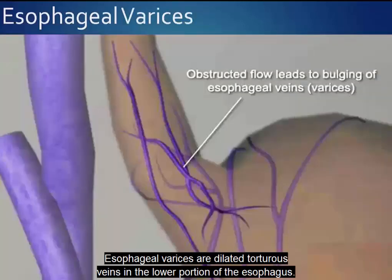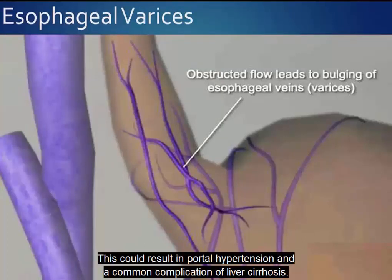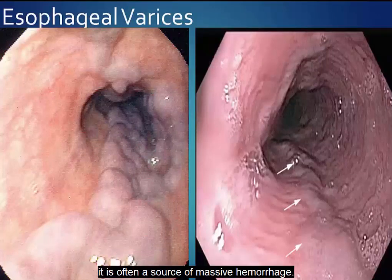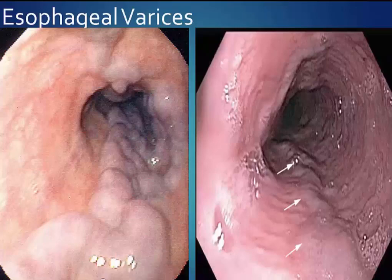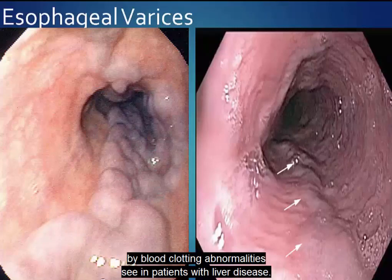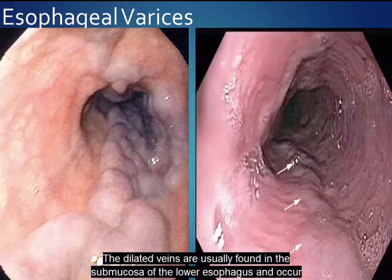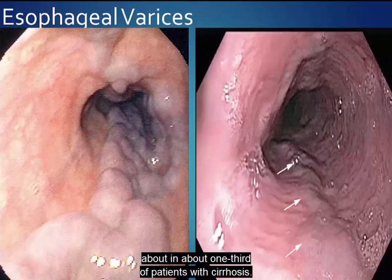Esophageal varices are dilated, tortuous veins in the lower portion of the esophagus. This can result in portal hypertension and is a common complication of liver cirrhosis. Due to the elevated pressure in the veins that drain into the portal system, it is often a source of massive hemorrhage. The potential for bleeding is increased by blood-clotting abnormalities seen in patients with liver disease, and the dilated veins are usually found in the submucosa of the lower esophagus, occurring in about one-third of patients with cirrhosis.